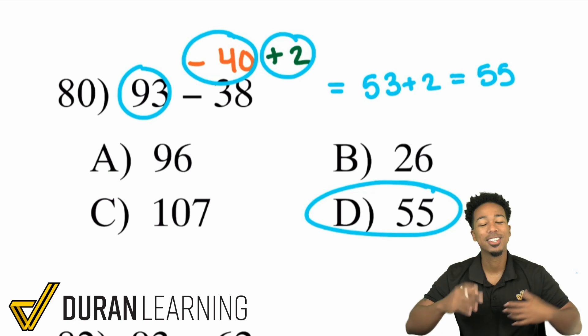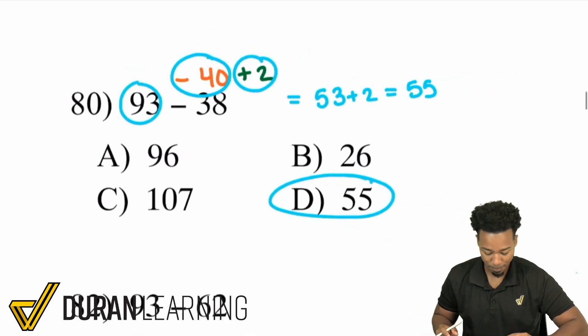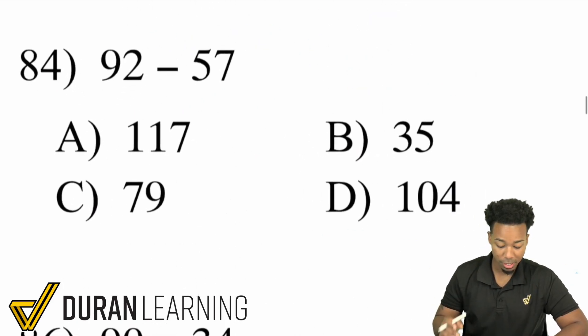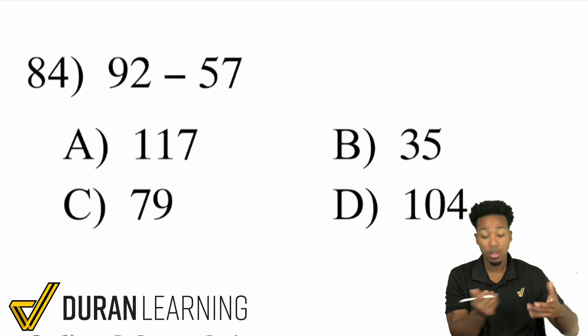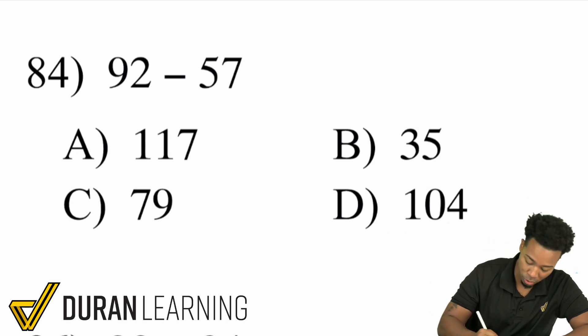Again I really hope you're starting to see the usefulness of this strategy. You can do this in your head without having to give it a second thought. So let's take a look at another one here. 92 minus 57. You can go ahead and do split and glue. Subtract 50 then subtract 7.